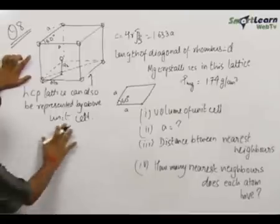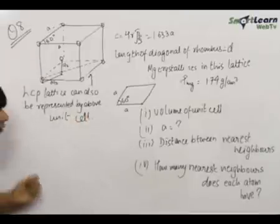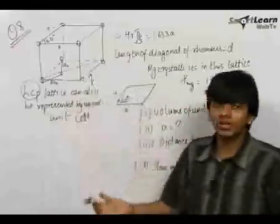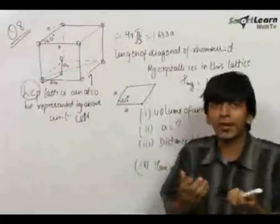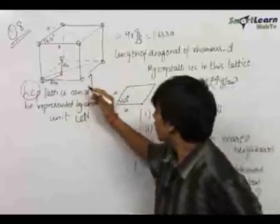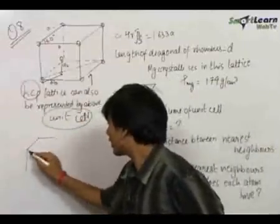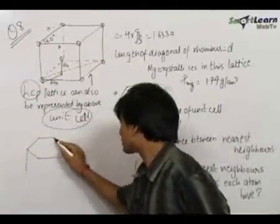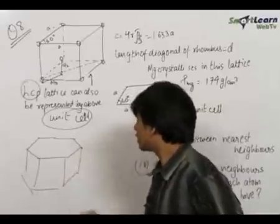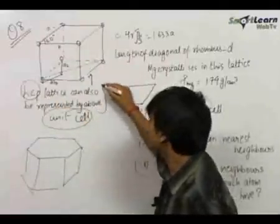What we learn most importantly from this question is that for a particular hexagonally close-packed structure, there can be more than one unit cell. It depends on the way you visualize it and break it to find a unit cell. We had earlier seen one type of unit cell for HCP, but now we see that the HCP lattice can also have a different unit cell.